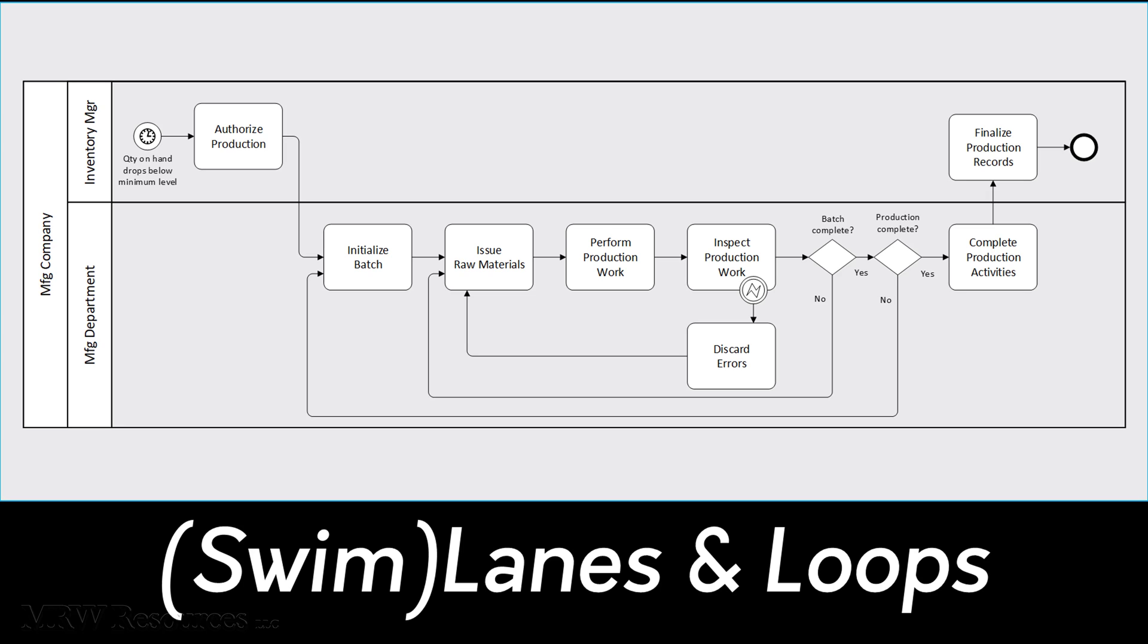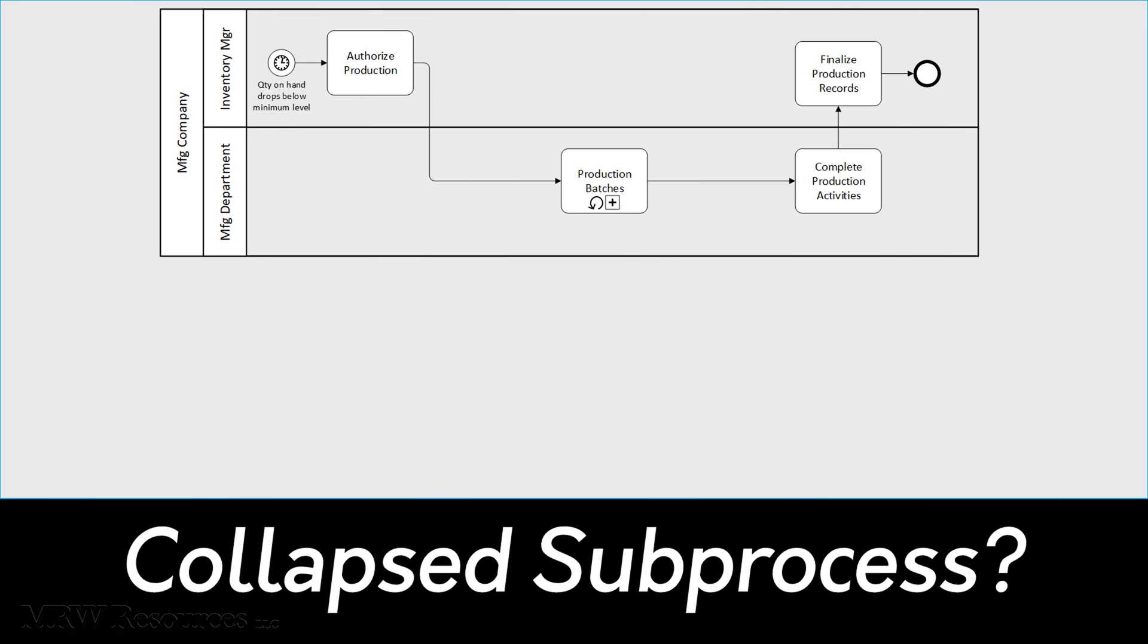If we think back to our introduction to BPMN activity modeling, you might recall that one option for activities is to present a collapsed subprocess. If you think about the batches within the conversion process, we basically have a looping collapsed subprocess that's part of our conversion process.